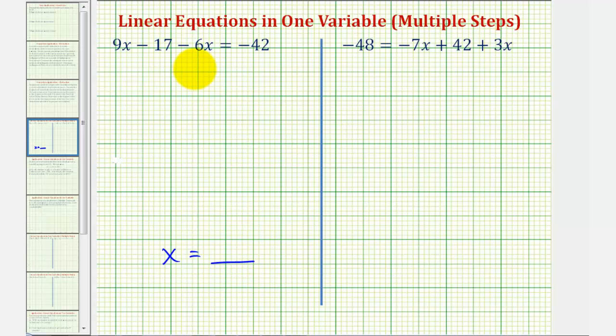The first step is to see if we can simplify either the left side or right side of the equation. Because the left side has two like terms, or two x terms, we can combine these two terms. Nine x minus six x is equal to three x, therefore the equation simplifies to 3x - 17 = -42.